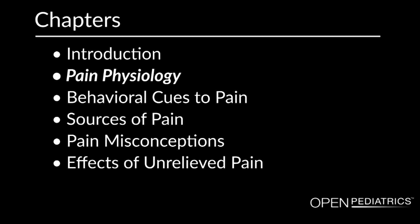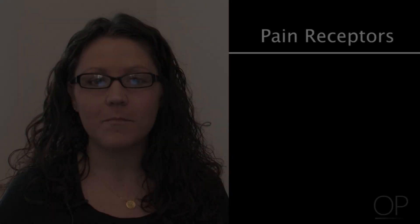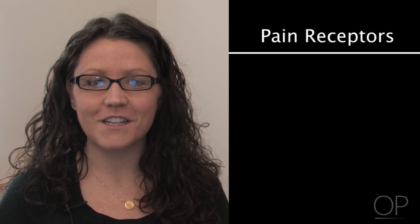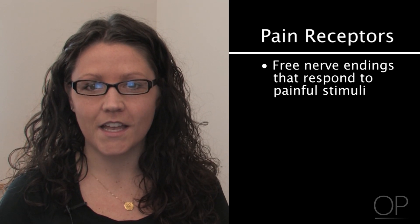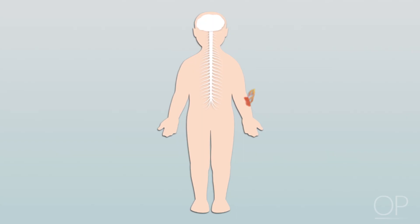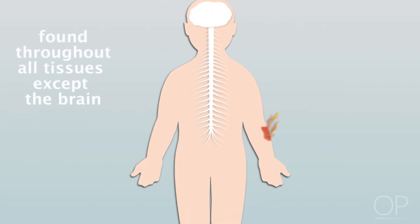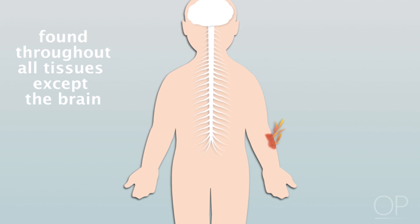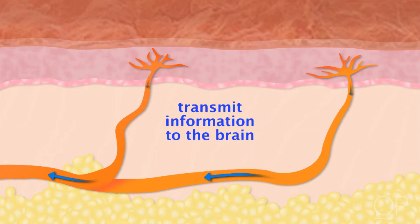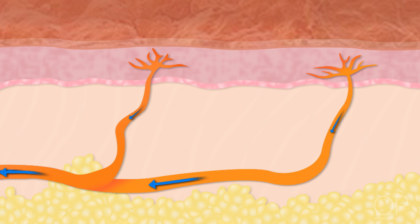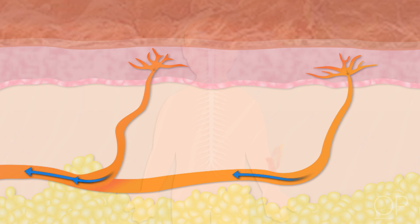Pain Physiology. Pain receptors are free nerve endings that respond to painful stimuli. Pain receptors are found throughout all tissue except the brain, and they transmit information to the brain. They are stimulated by biological, electrical, thermal, mechanical, and chemical stimuli.